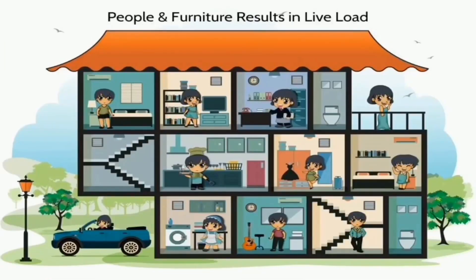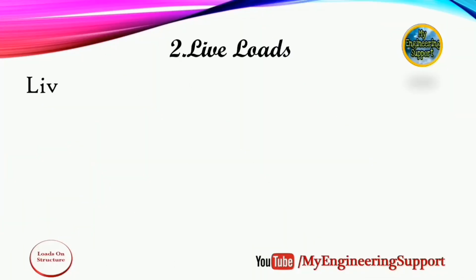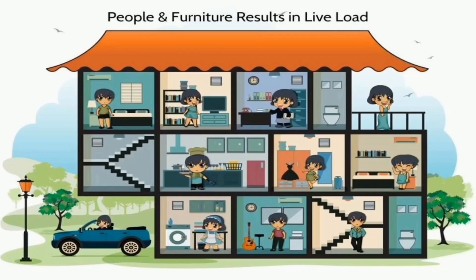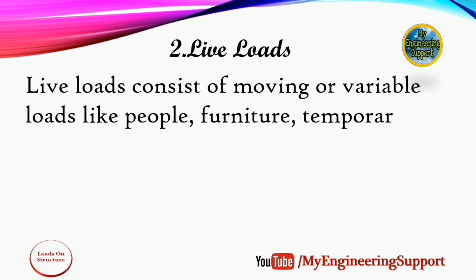دوسرا load ہوتا ہے structure پر live load۔ یہ load variable ہوتا رہتا ہے کیونکہ یہ load building میں move کرنے والے لوگوں، building میں use ہونے والے furniture اور temporary stores کا ہوتا ہے۔ اسے super imposed load بھی کہا جاتا ہے۔